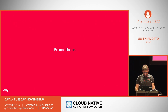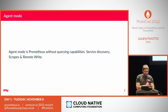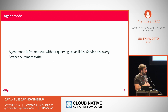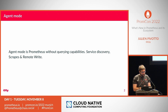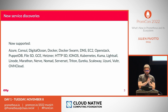Let's start with Prometheus itself. One year ago we announced the agent mode, which was contributed by Grafana. The agent mode in Prometheus is basically optimized to do remote write — you can deploy an agent at the edge of your infrastructure and it will only do service discovery, scraping, and remote write. This is useful when you don't need local alerting rules or don't have many resources and just want to remote write to Cortex, Thanos, Mimir, or any other remote write endpoint.